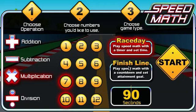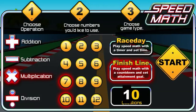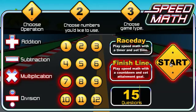If I do the Finish Line mode, that means I set how many problems I want to get right, and then the game will time you. Let's try this one actually. Let's say I want to get 15 — how fast will it take me to get 15 problems right? Let's start.